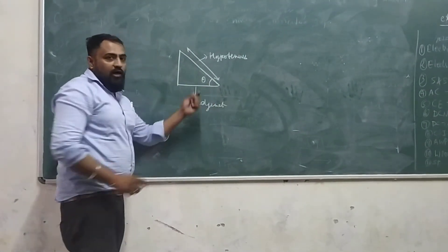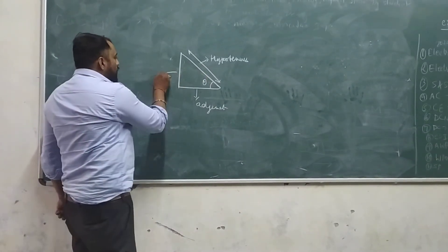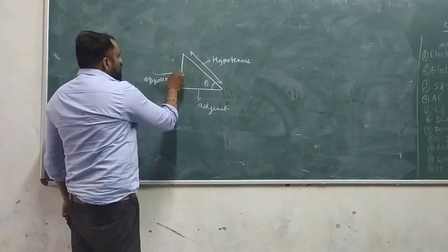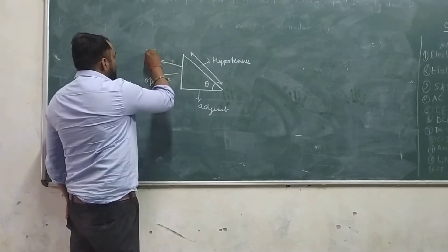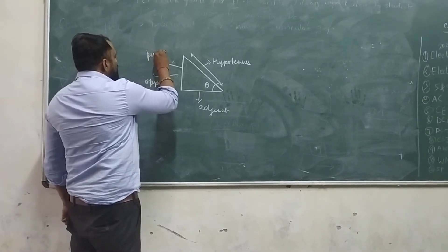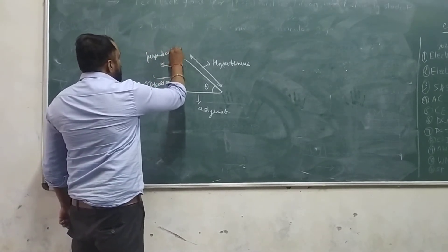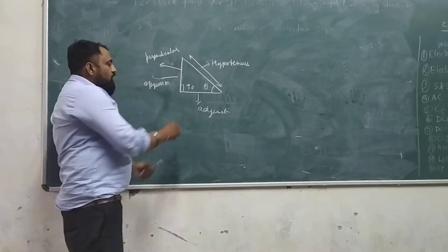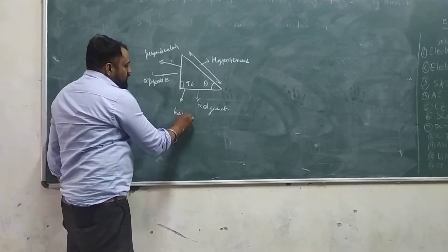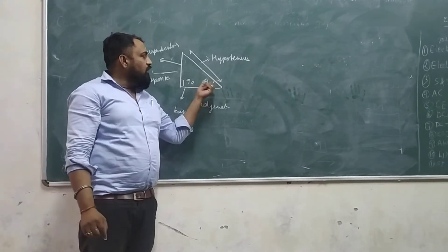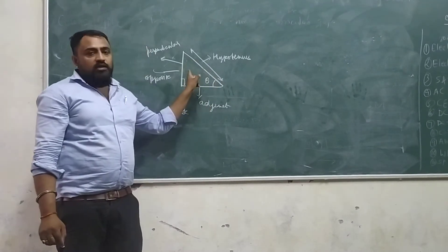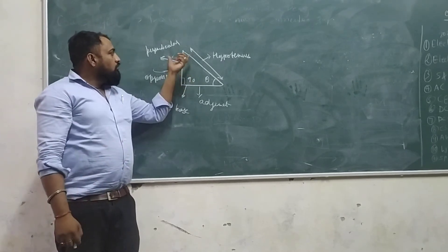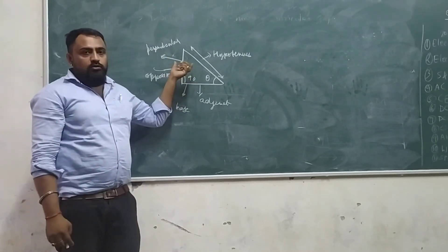And the opposite side of the triangle, opposite to theta, is called the opposite side. This side is called the perpendicular because this angle is 90 degrees, and this side is called the base of the right angle triangle. In this right angle triangle, we find the value of the unknown angles and the sides which are not known.